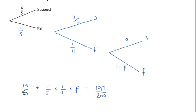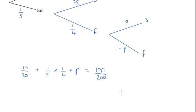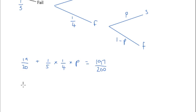So this is already him succeeding on his first or second attempt. This is him succeeding on his third attempt, and they have to add up to 197 over 200. So if we rearrange this equation or simplify this equation, that's going to be P over 20, that needs to equal 197 over 200.